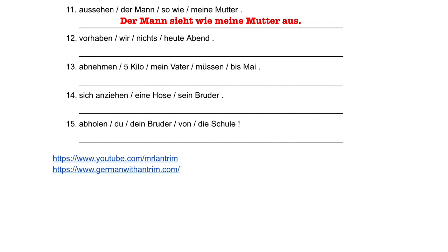In number 12, we have the verb vorhaben — to have planned. Wir is the subject, which means the conjugated form is the same as the infinitive. Vor goes at the end of the sentence as the separable prefix. Wir haben heute nichts vor — we have nothing planned today.